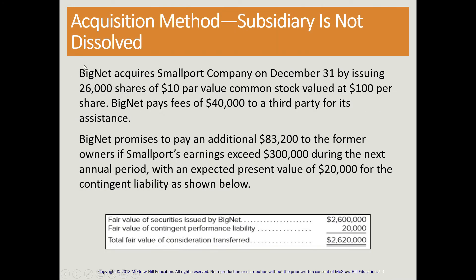Continuing with our previous example, Big Net acquires Small Port on December 31st — the last day of the year — by issuing 26,000 shares with a $10 par value per share and a $100 fair market value per share. There are fees associated with this acquisition and a contingency attached, discussed in our previous presentation, so the present value of that contingency is included in the acquisition price that Big Net is paying to acquire Small Port.